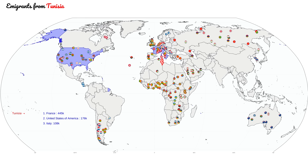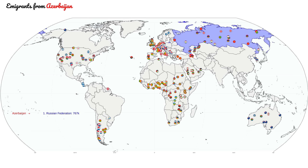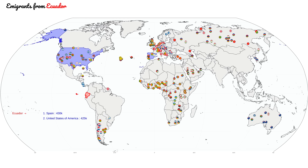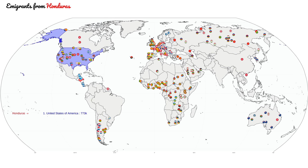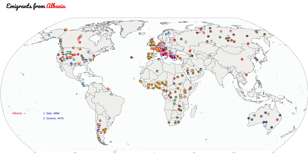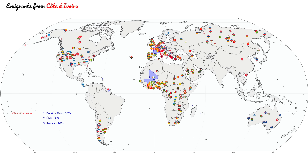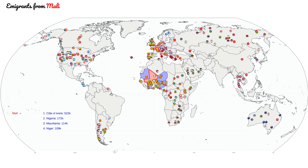If we take stock of where we are so far, we can see that the main destinations seem to be the United States, Europe, and in South America, Argentina. Argentina is the third most populous country in South America but the second largest Spanish-speaking country, and it is richer than Colombia, the largest.